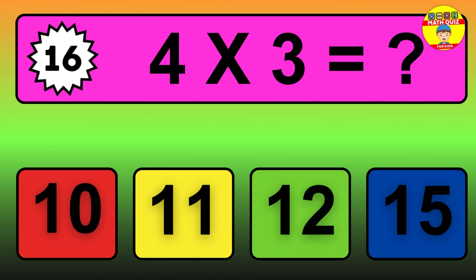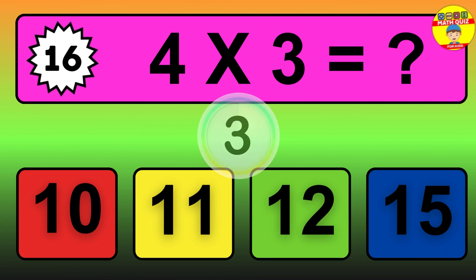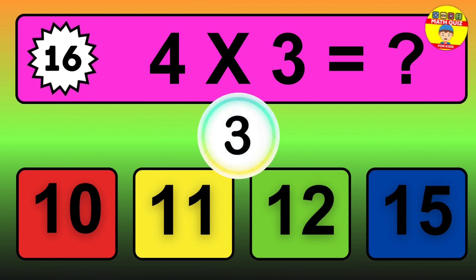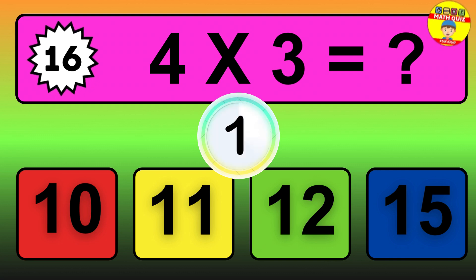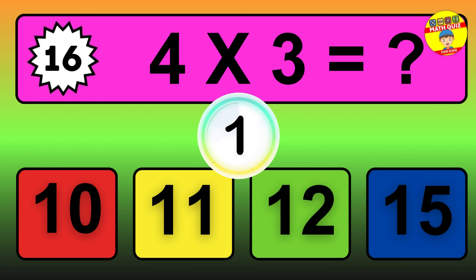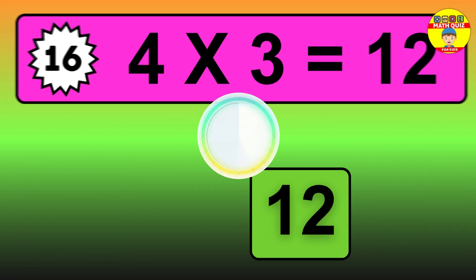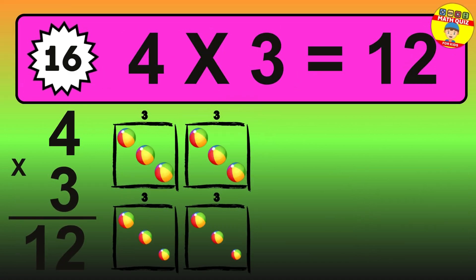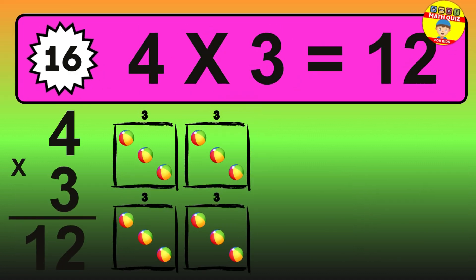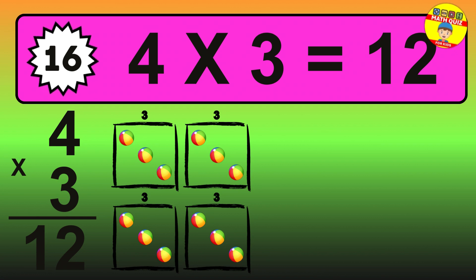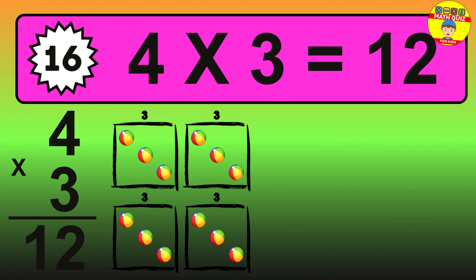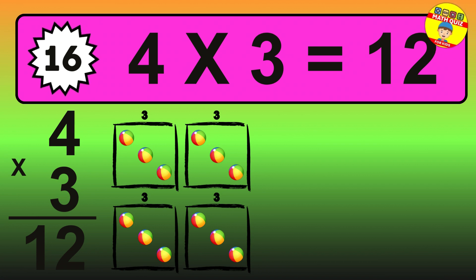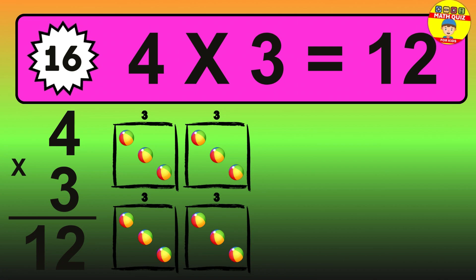Question 16. 4 times 3 equals what? The answer is 4 times 3 is 12. To calculate, we have 4 groups with 3 balls each one. So, how many balls do we have? 12 balls.